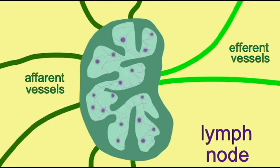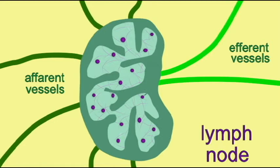Foreign particles are caught in a web of reticular fibers where macrophages and lymphocytes can dispose of them and mount an immune response. Knowing the anatomical locations of lymph nodes can be important. For example, cancer cells may be lodged here, and the presence of cancer cells in a lymph node may help diagnose a tumor as benign or malignant.